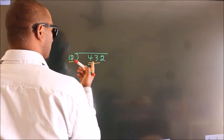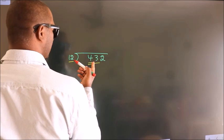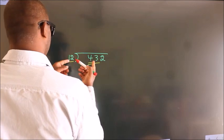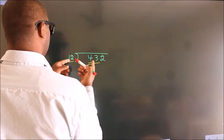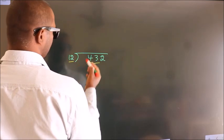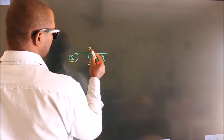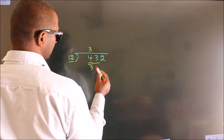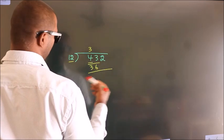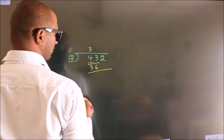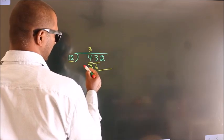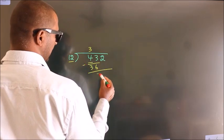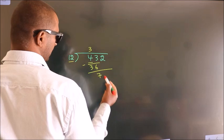A number close to 43 in the 12 times table is 12 threes, which is 36. Now we should subtract, and we get 7.